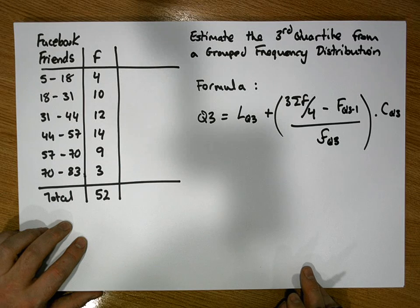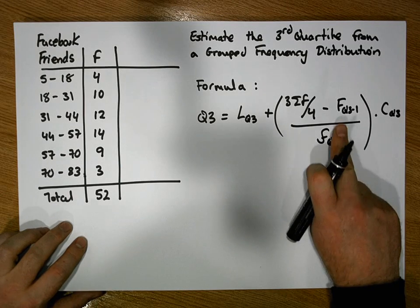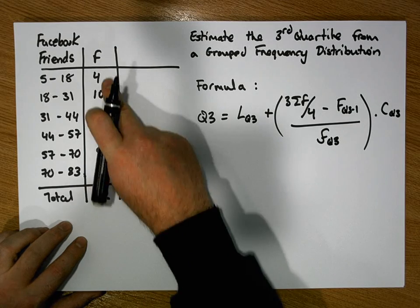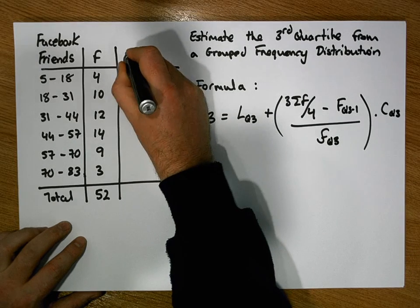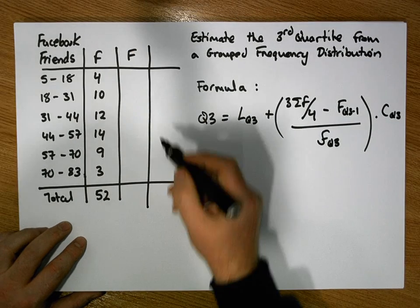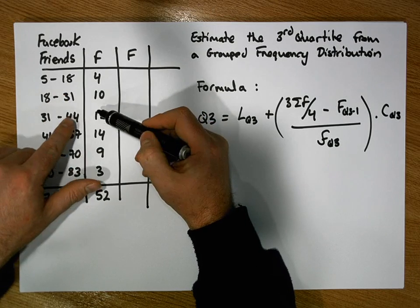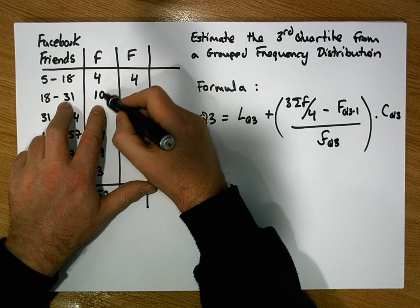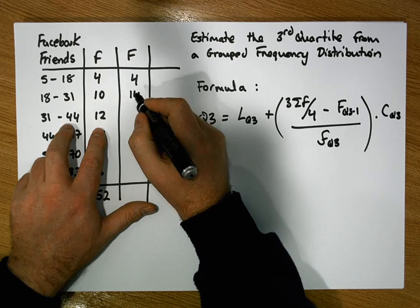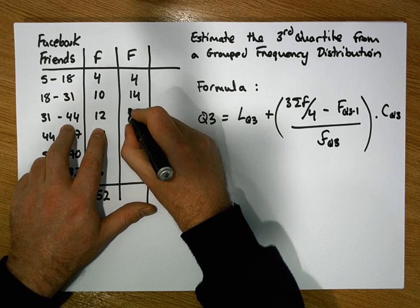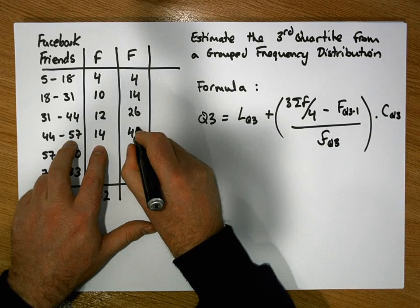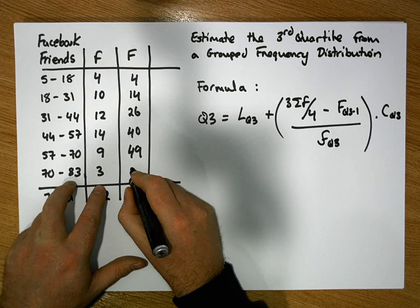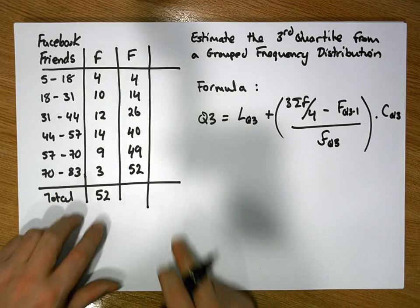The first thing we should do is calculate our cumulative frequencies. We augment the table with cumulative frequencies, where capital F represents cumulative frequency — simply an accumulation of frequencies as we go down through the classes. There are 4 less than 18, 14 less than 31, 26 less than 44, 40 less than 57, 49 less than 70, and all 52 observations are less than 83.